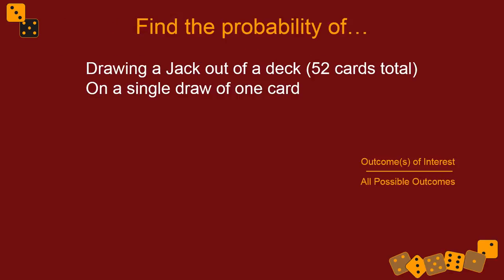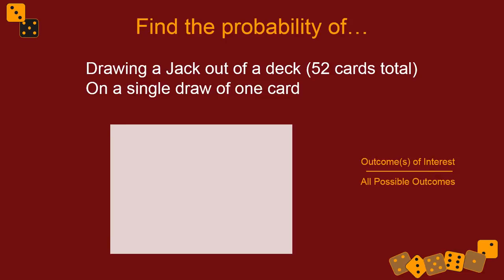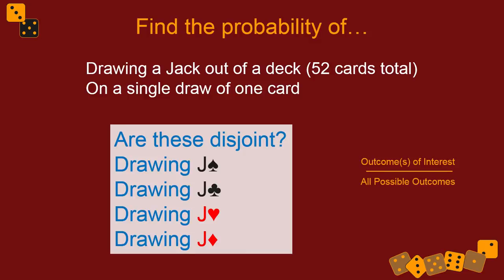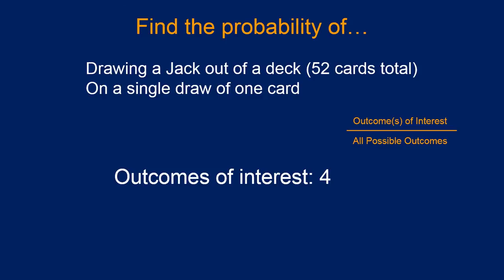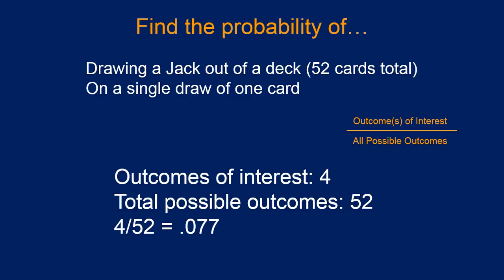As an example, drawing a jack out of a deck of cards on a single draw of one card. Are these four possibilities disjoint? Yeah, they are, because you can only draw one of them. In fact, they're disjoint from every other card draw that you might draw. The number of outcomes of interest - there are four possible things that could happen that we're interested in here. Four jacks and there are 52 outcomes. So we divide that and we get about 0.08. That's the probability of drawing a jack.